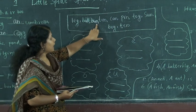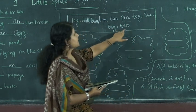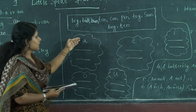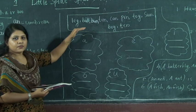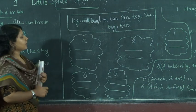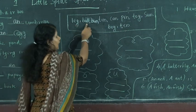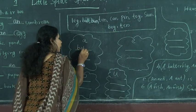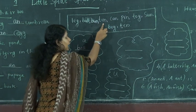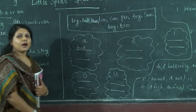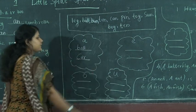The words in the box are: lug, ball, bun, tin, cart, pin, toy, sun, boy, tan. For the A cloud, the words are ball and car — both contain the letter A. Write ball and car in the first cloud.